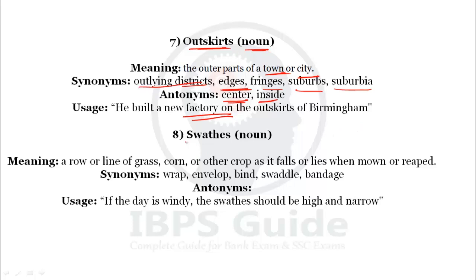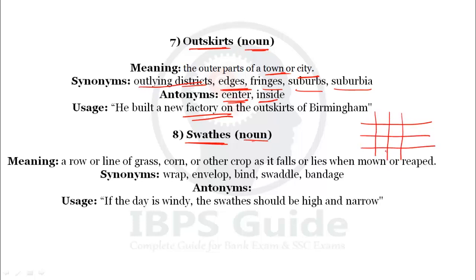Our next word is 'swath.' Swath is a noun meaning a row or line of grass or other crops that falls or lies after being mowed or reaped. When grass or crops are cut and left in lines for reaping, that is called a swath. Synonyms: wrap, involve, envelope, bind, swaddle, and bandage.